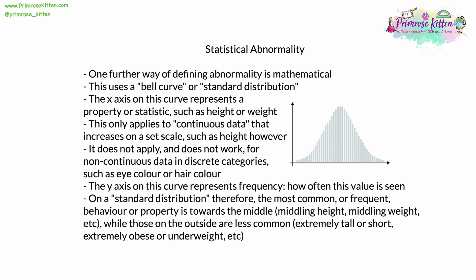The y-axis represents frequency — how often a value is seen. On this standard distribution, the most common behaviour or property is towards the middle, such as middling height or weight, around the average. There are more people with middling height or weight, so the curve is higher there. Those at either extreme — very low or very high — are less common, so the curve is much lower at those ends.